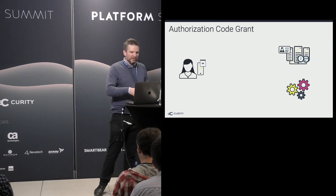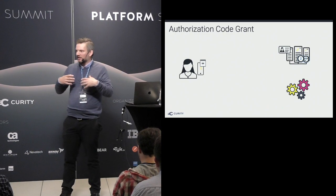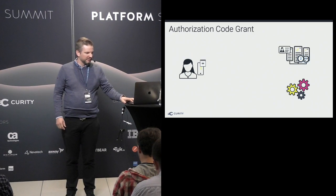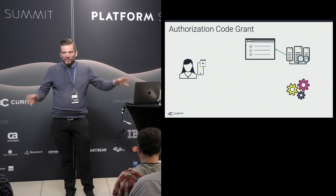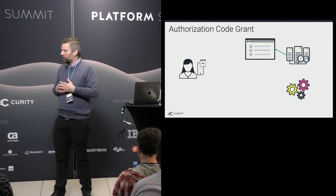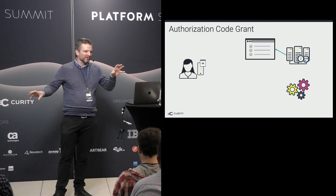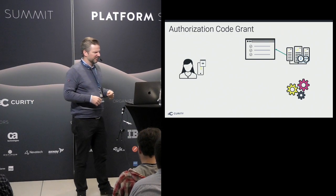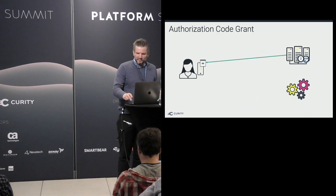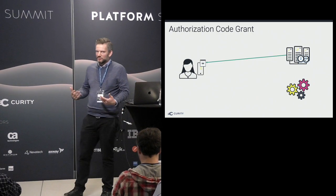Once authenticated, the OAuth server knows who we are and can proceed to delegate access to the third-party app. First, it needs to ask the user: there's a third-party app requesting your data from a microservice — do you allow that? We've all seen it; we've used Facebook and things like that. If the user consents, we proceed.